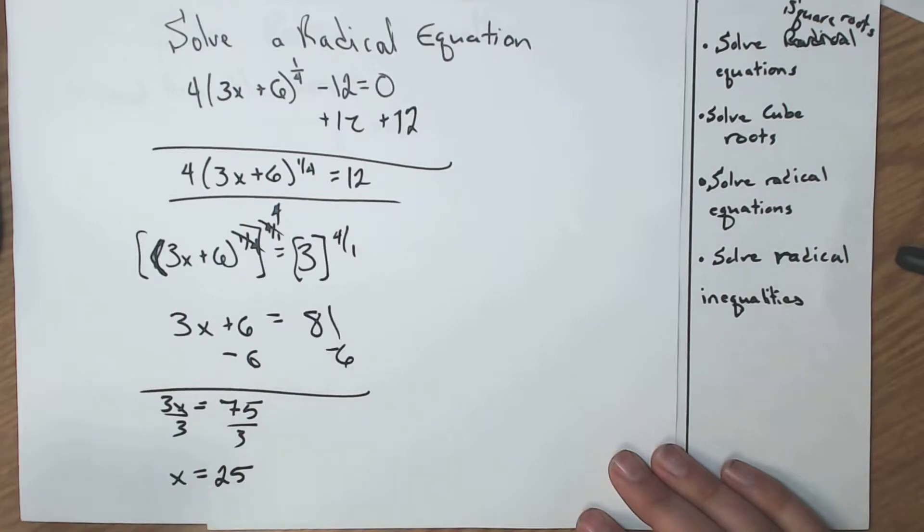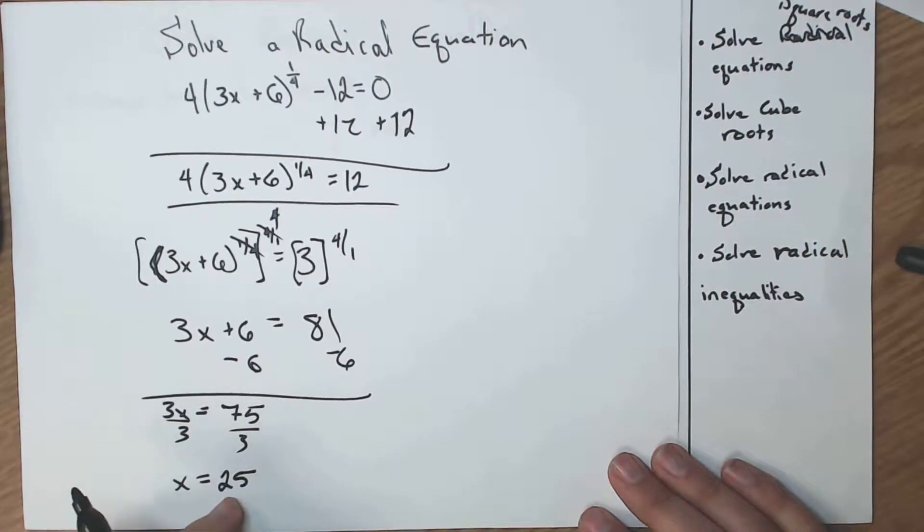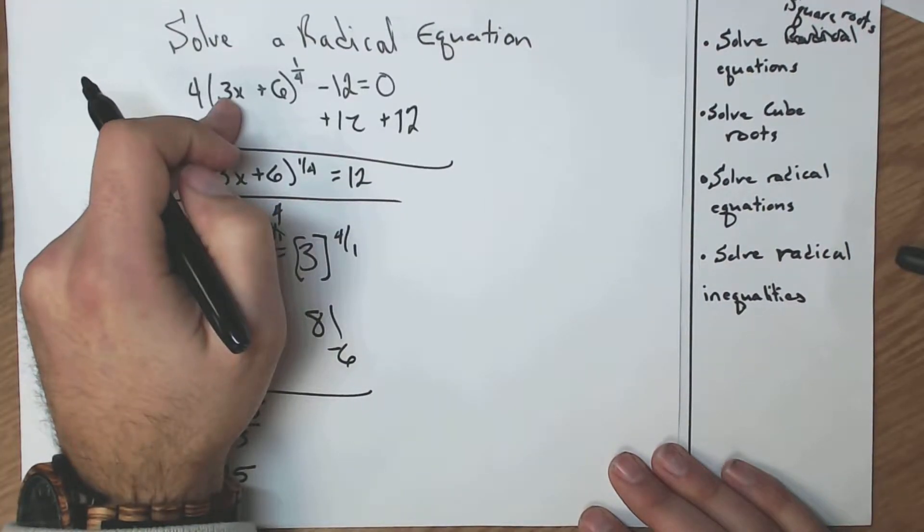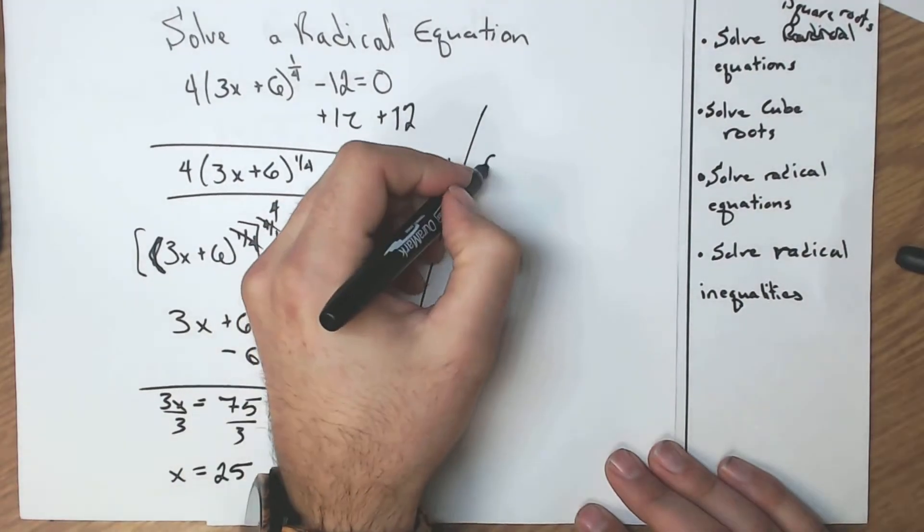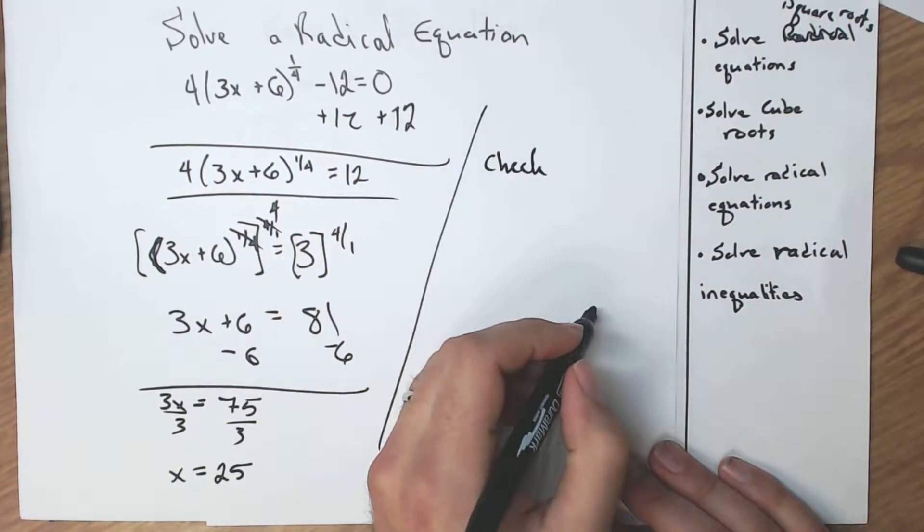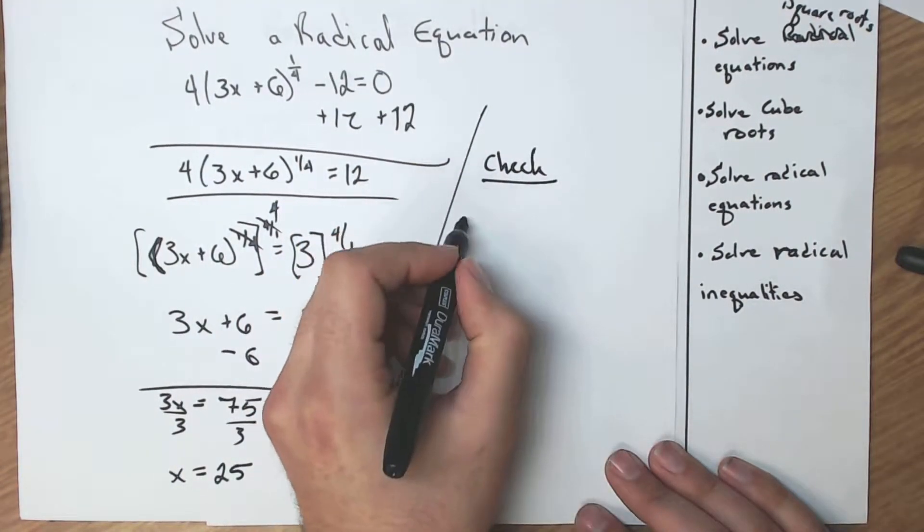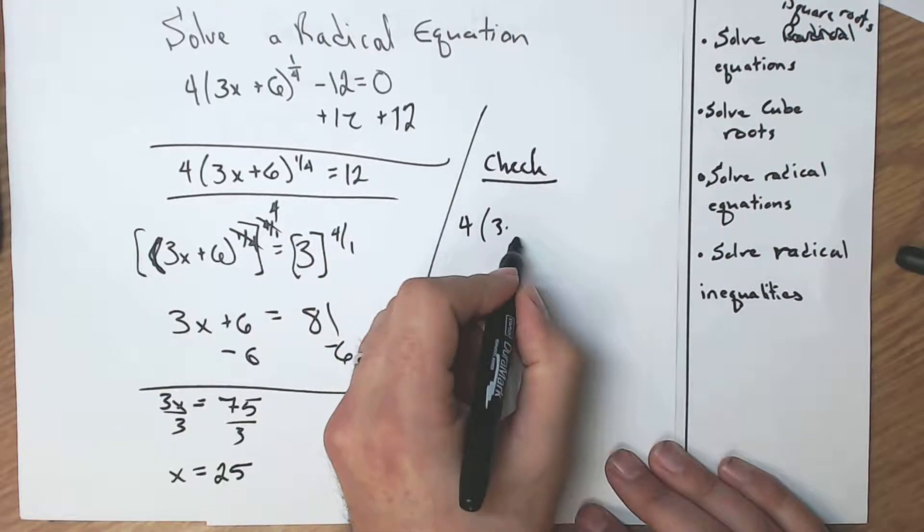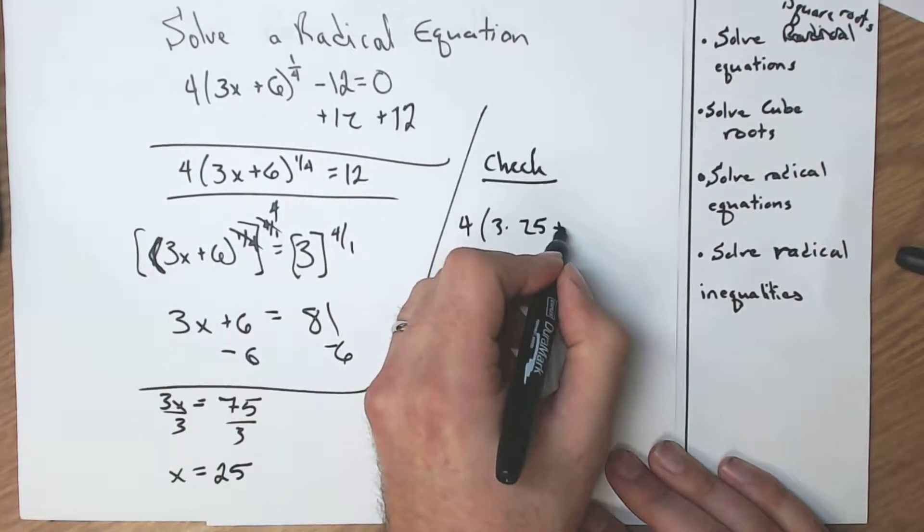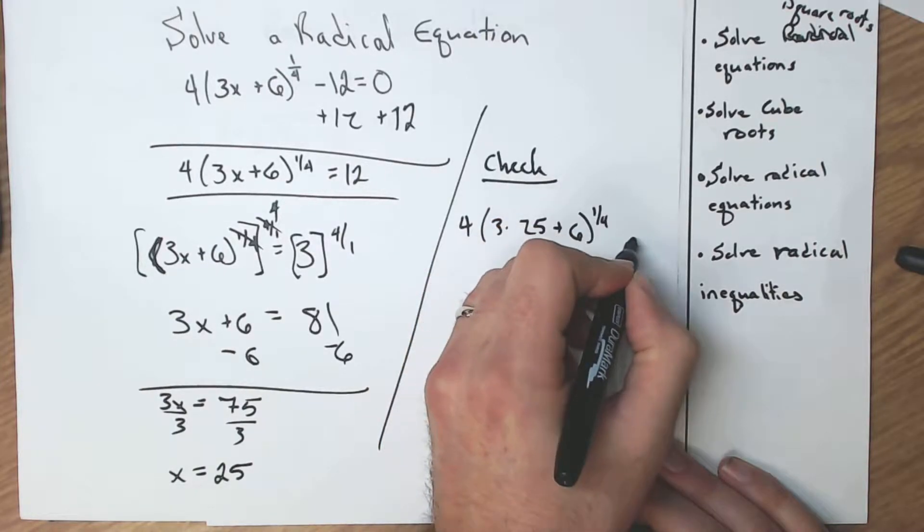But we have to double check and make sure that that's not an extraneous solution. So I take that and I plug it back in up top. Let's do that over here. Our check. So I have 4 times 3 times my x value, 25, plus 6, raised to the 1 fourth, minus 12. Does that equal 0?